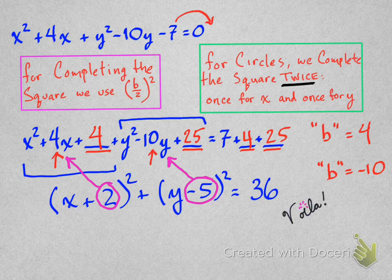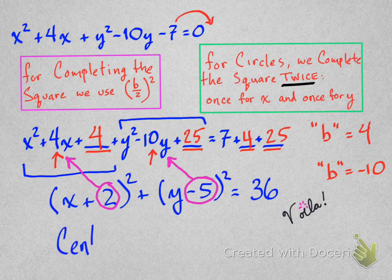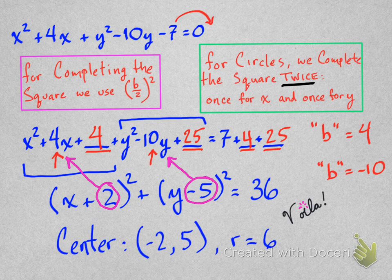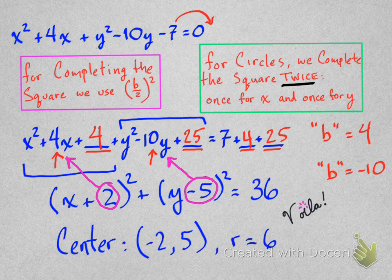So now we know we're done, voila, and we know the center coordinates, (-2, 5), and we know the radius equals 6. And that's great, all right? So we got that information now.